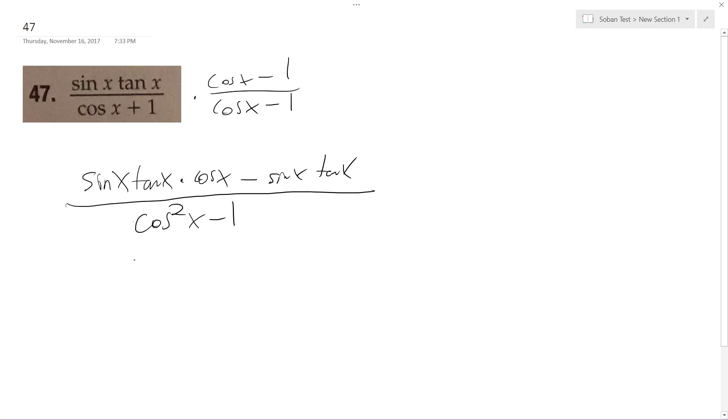I'm going to rewrite this as 1 minus the cosine squared x, and then you have to factor out negative 1. And then what this becomes is just 1.